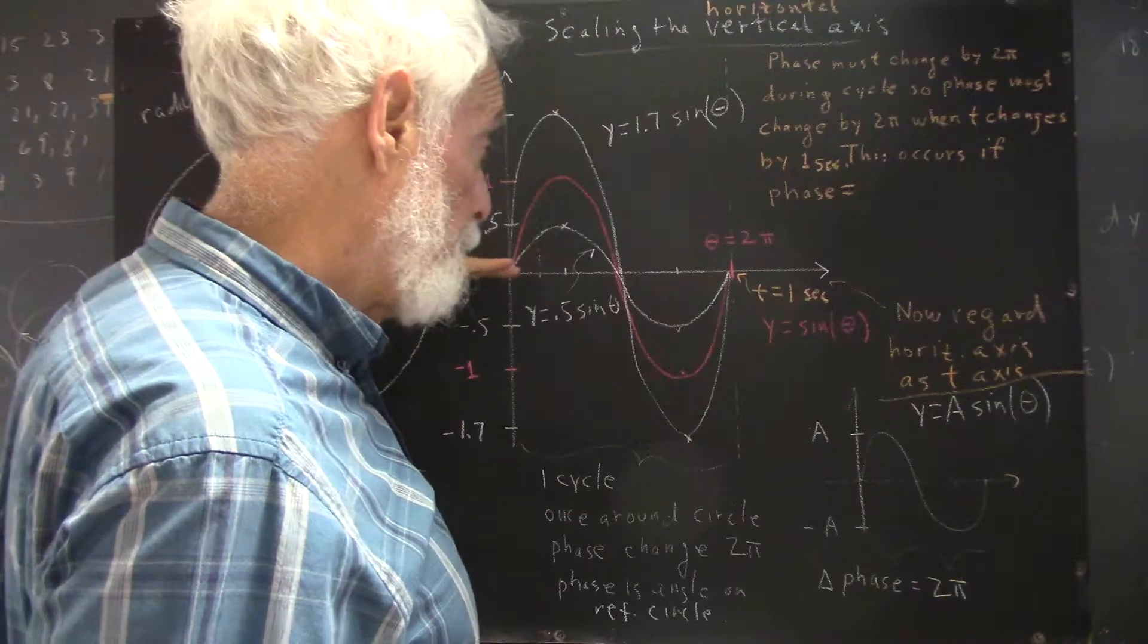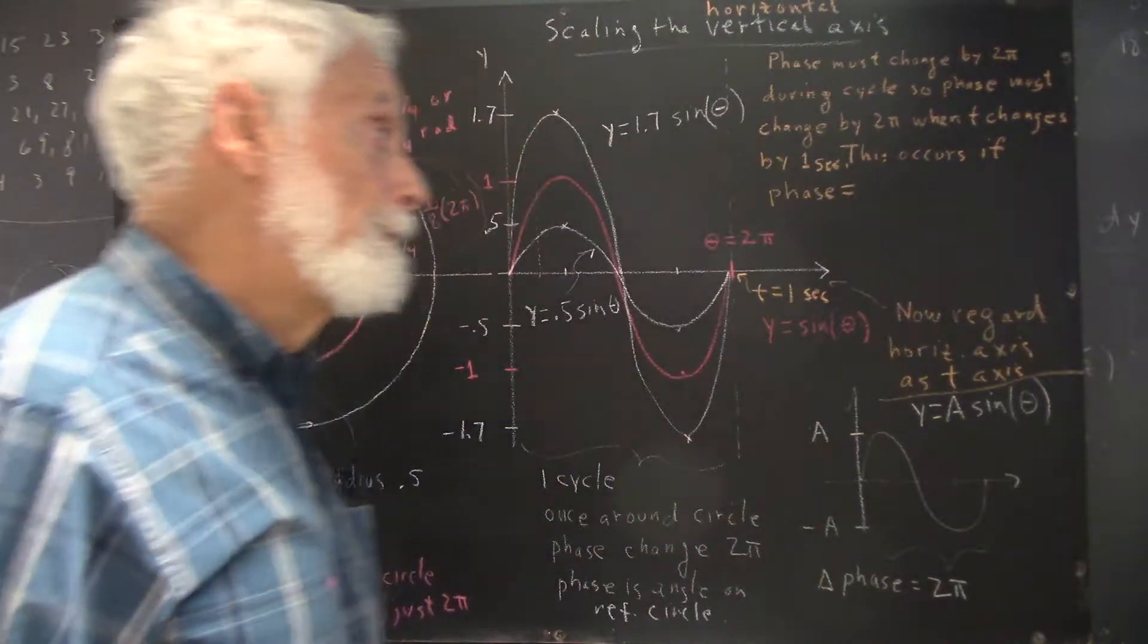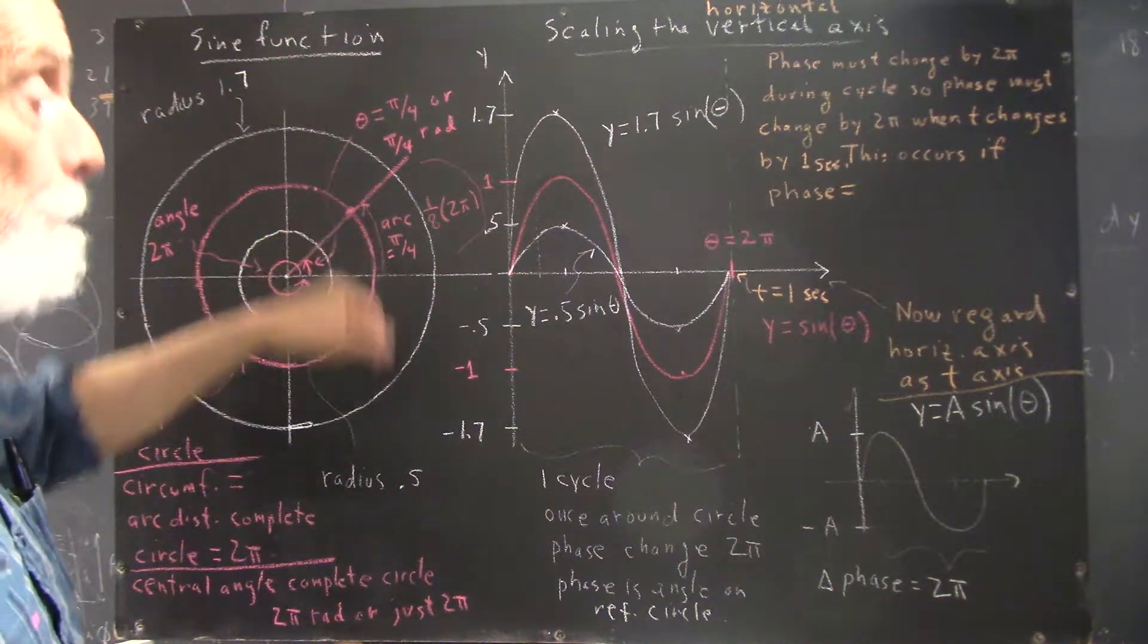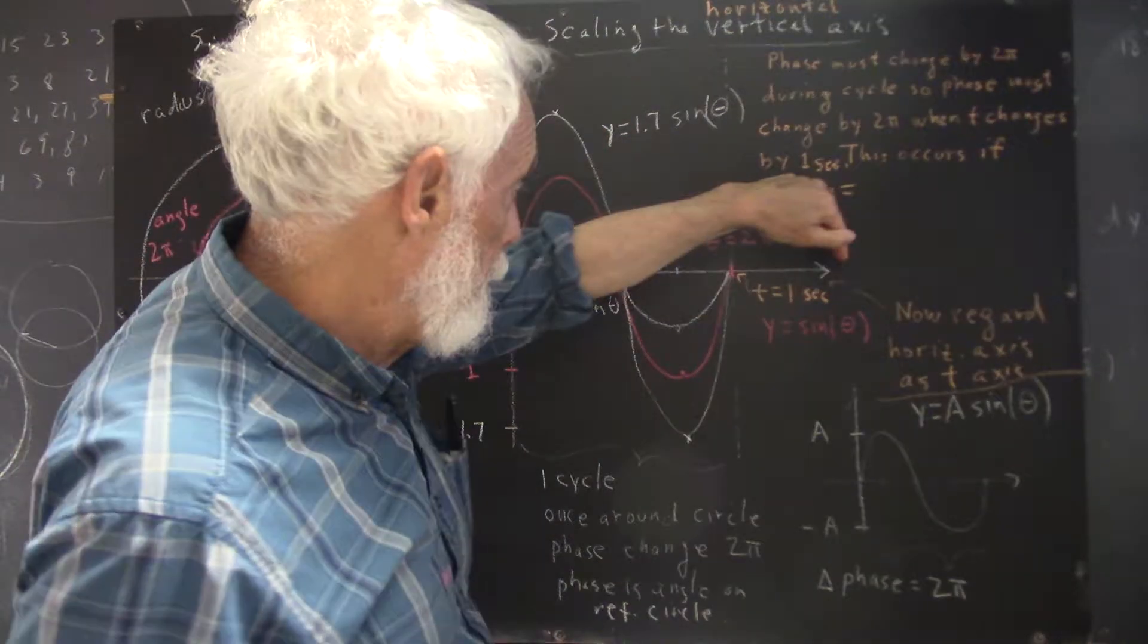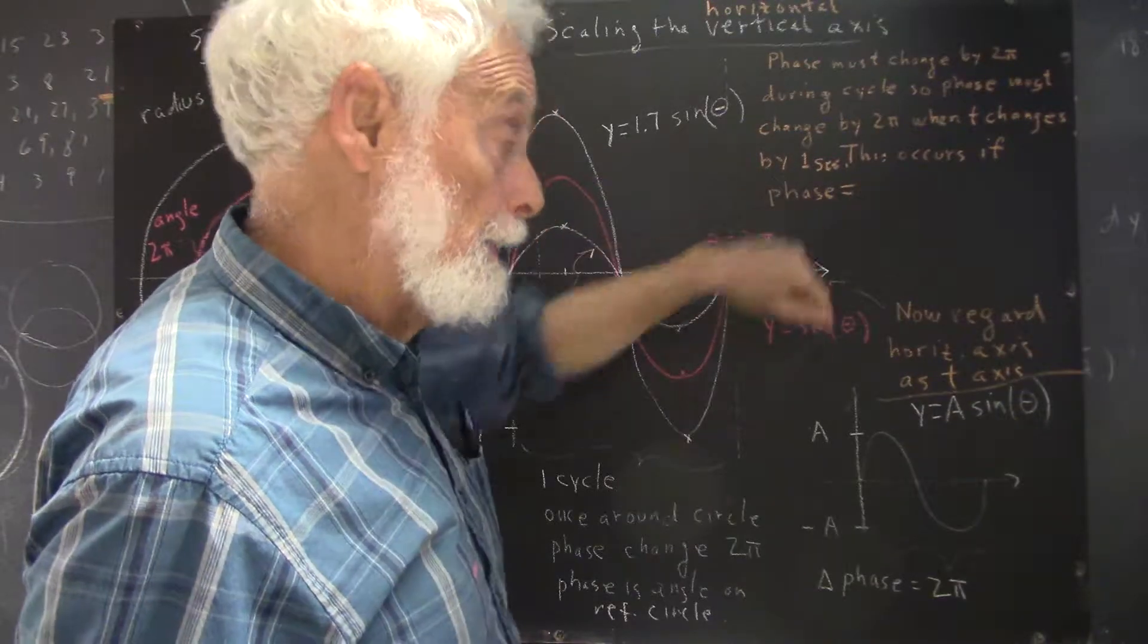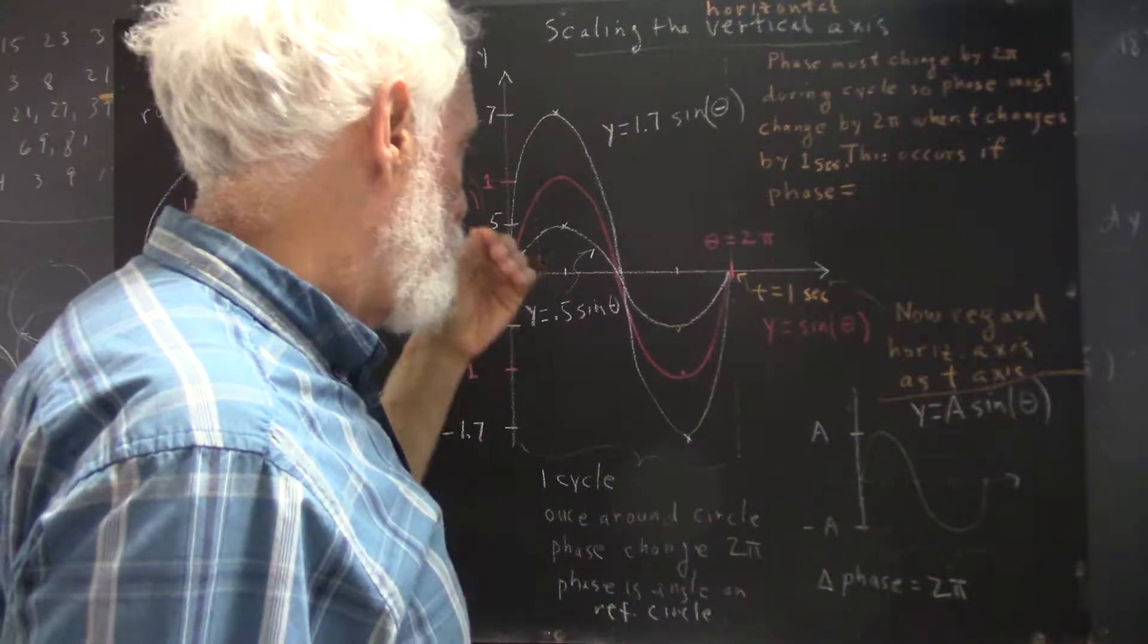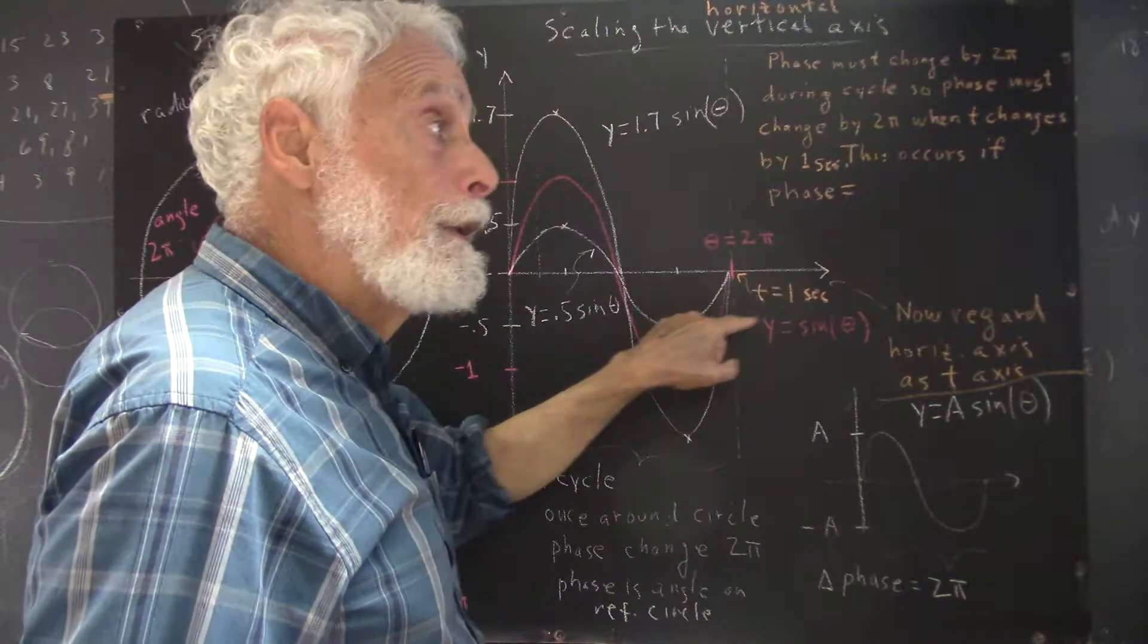The origin corresponds to time zero and time increases as we move to the right along the t-axis. This would correspond to motion around a circle, but now the motion is occurring in time. Furthermore, we're going to say that the cycle lasts for one second, so t goes from zero to one second during a complete cycle.